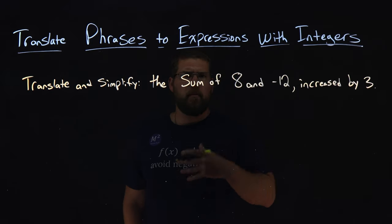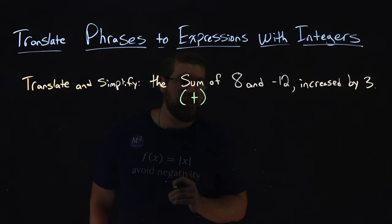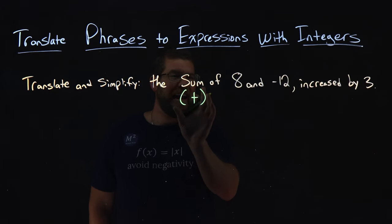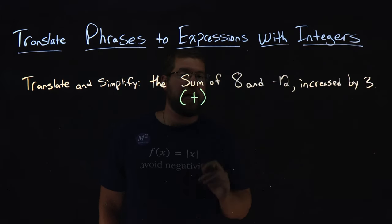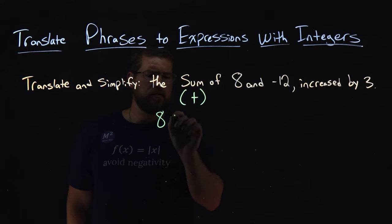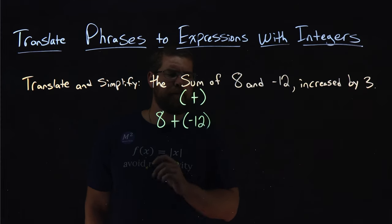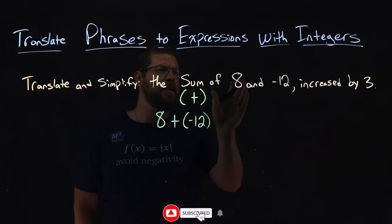Let's talk about the sum. When we talk about the sum of something, that means we are adding it, addition. And we're adding the sum of 8 and negative 12. So let's go write that down first, the sum of 8 and negative 12. So we have 8 plus parentheses, let's put a negative 12 right here. So we have the sum of 8 and negative 12.